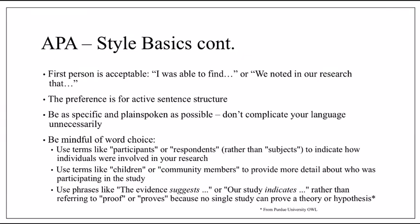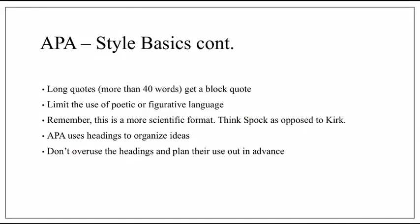For APA style basics: first person is absolutely acceptable, since you'll often be reporting on your own research — 'I did this' or 'we did that' is perfectly fine. We definitely want active sentence structure, and you don't need overly complicated language. We're just trying to explain ideas as simply and plainly as possible. Word choice is important — be as specific as possible about the people or things you're discussing. For example, there's a difference between 'participants' — someone who takes part in a study — and 'respondents' — someone who just answers questions.